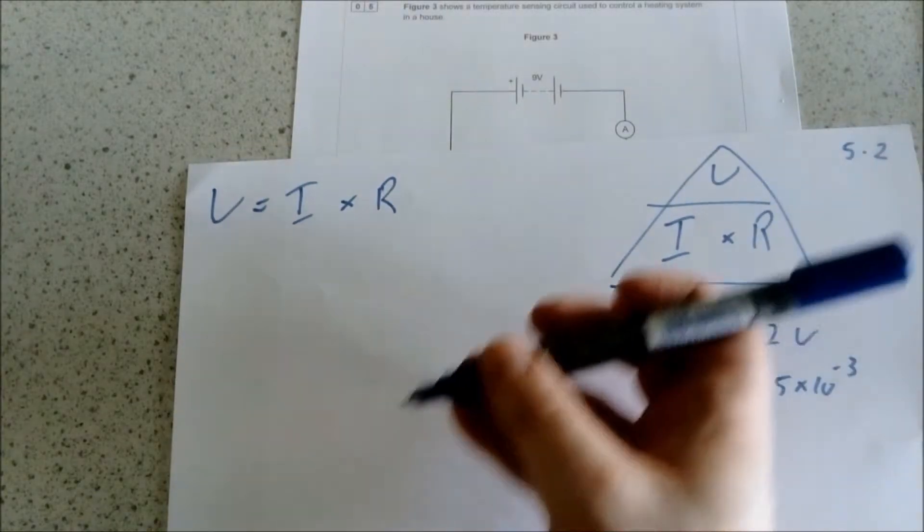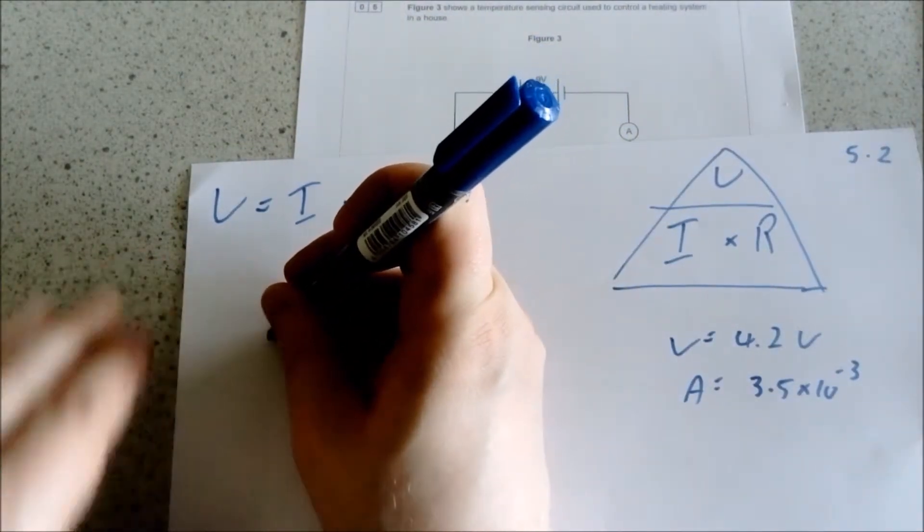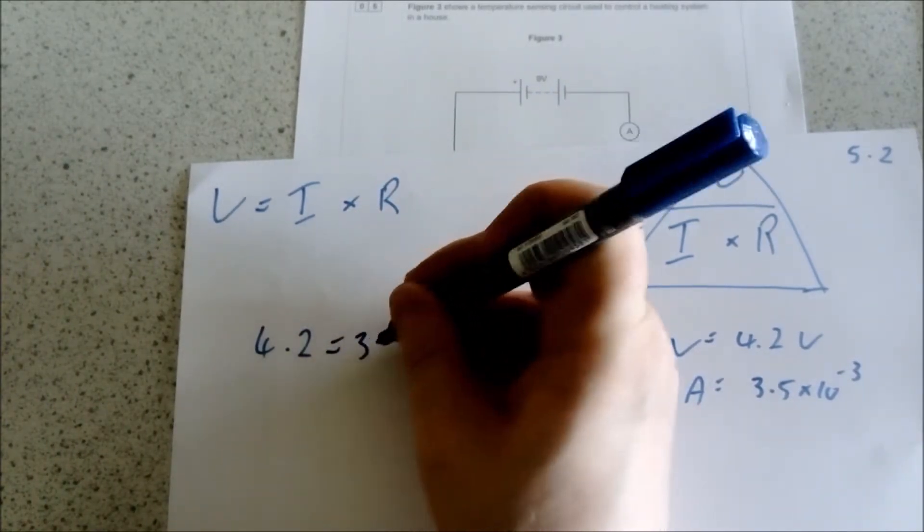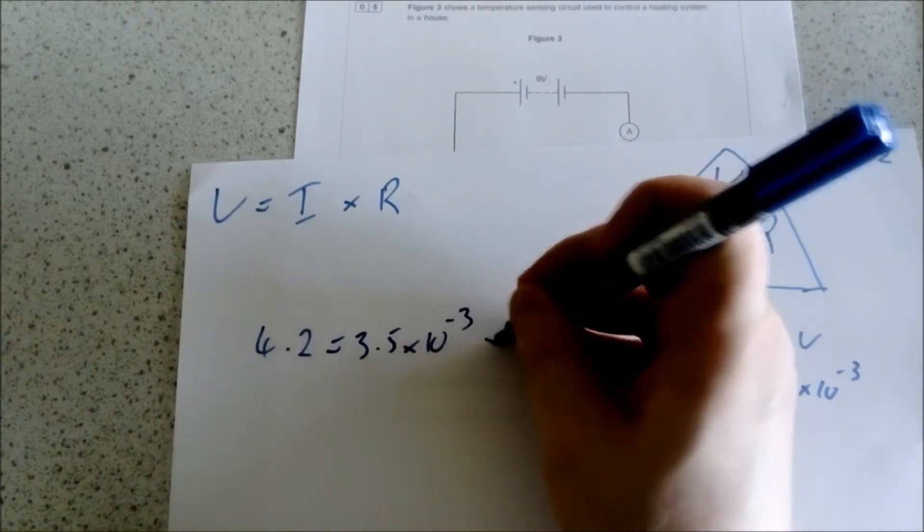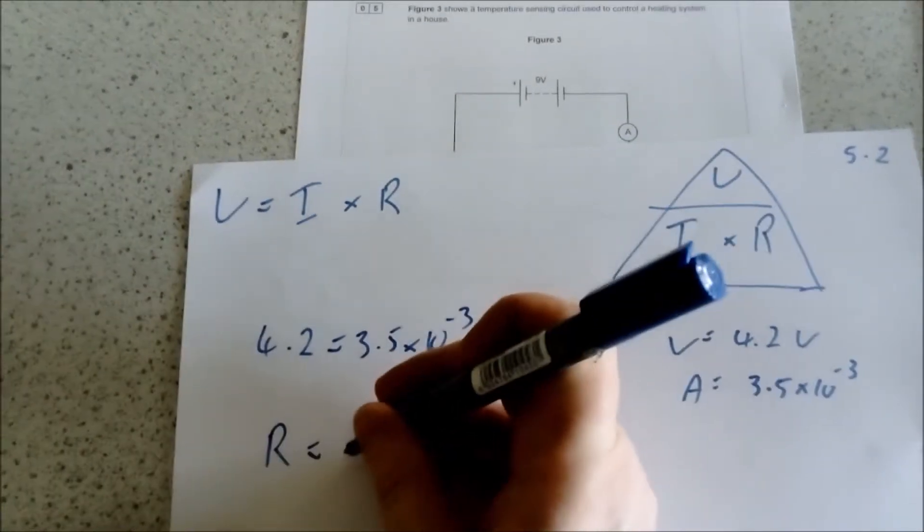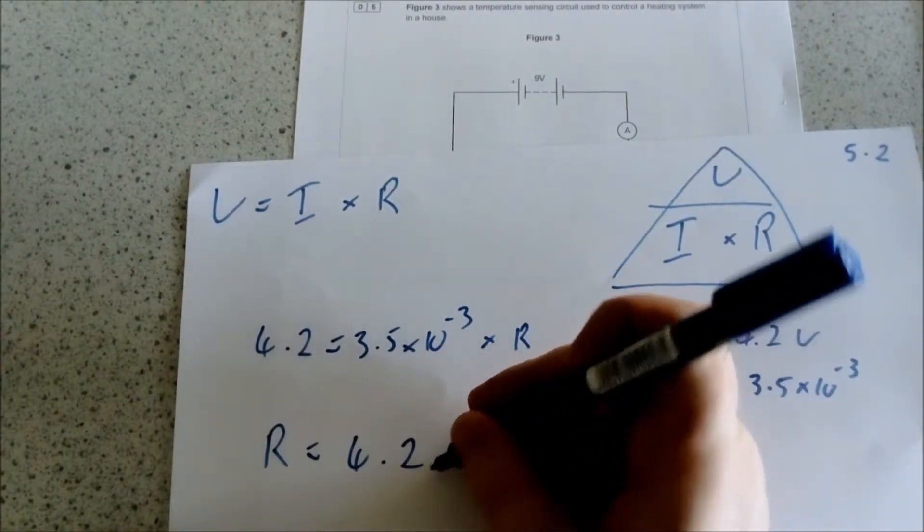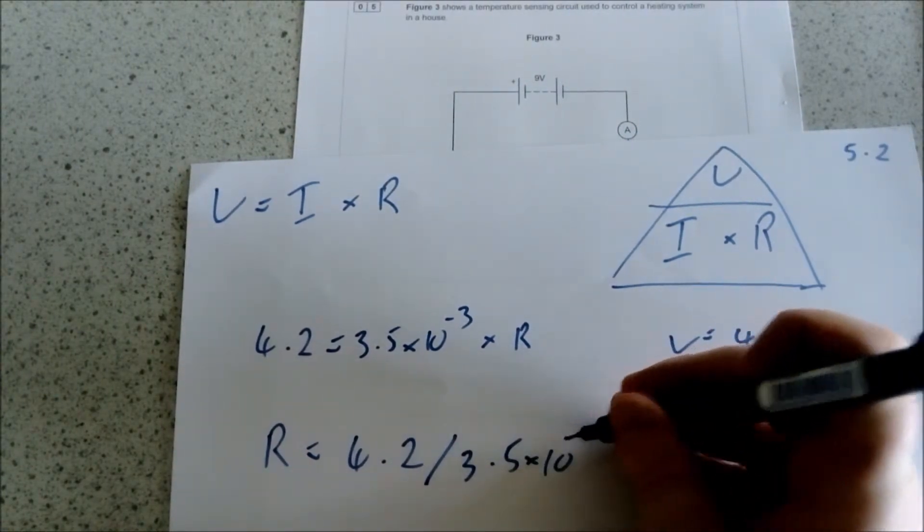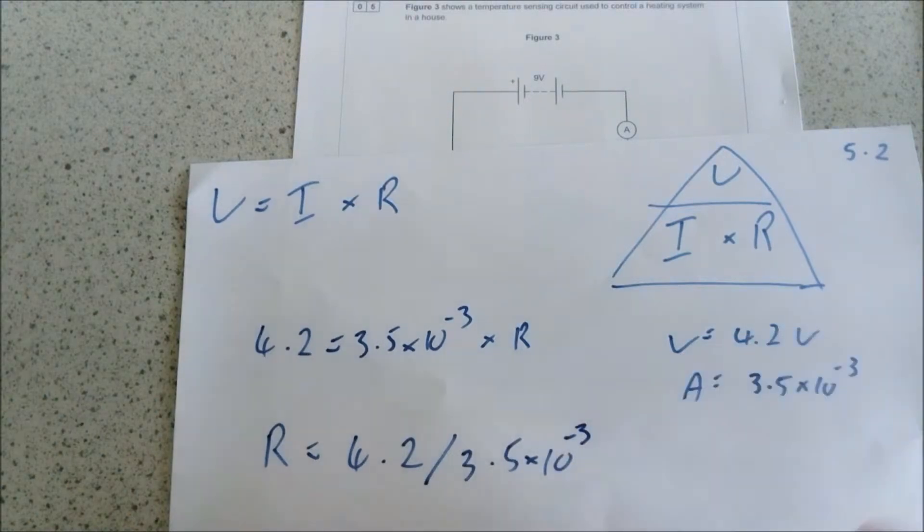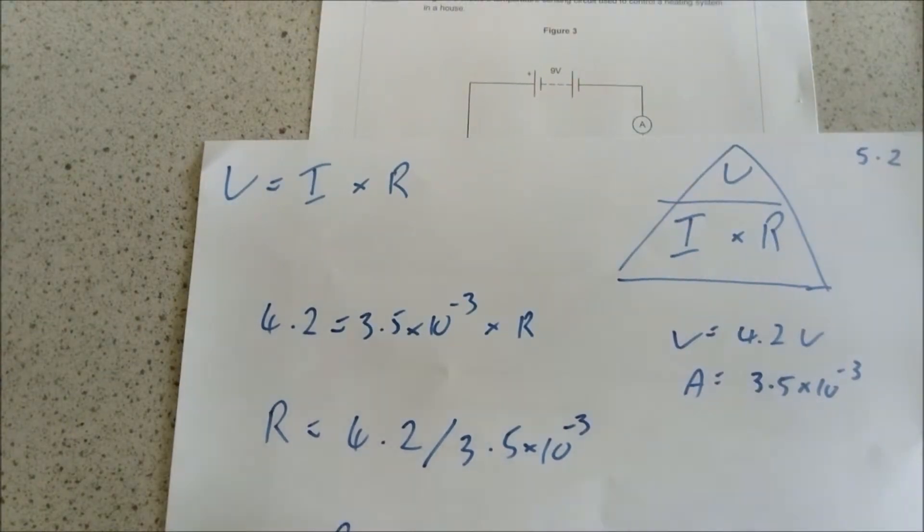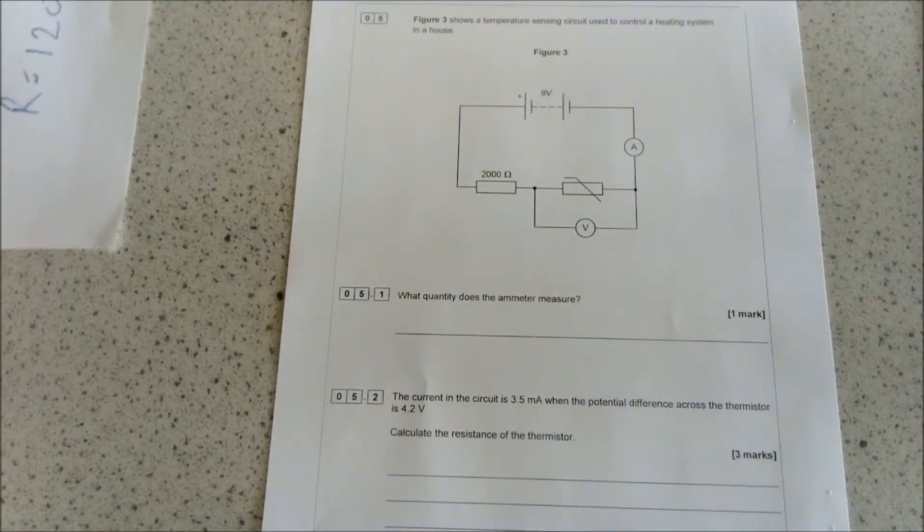You've got to remember to convert your milliamps back into amps. So put the variables in: 4.2 is equal to 3.5 times 10 to the minus 3 times resistance. Therefore resistance is going to be equal to 4.2 divided by 3.5 times 10 to the power of minus 3. So therefore your resistance is going to equal 1200 ohms. Remember the symbol is ohms.